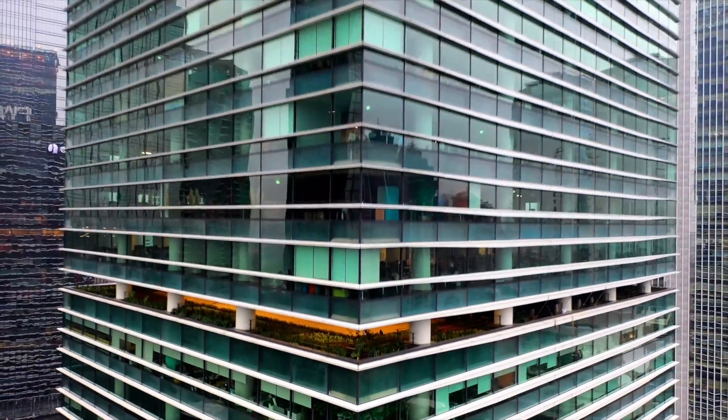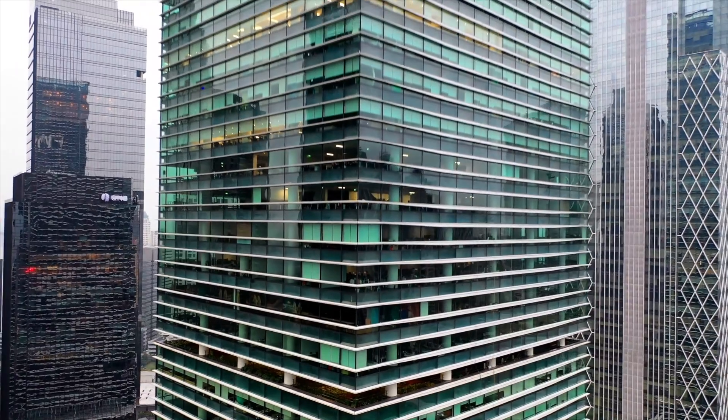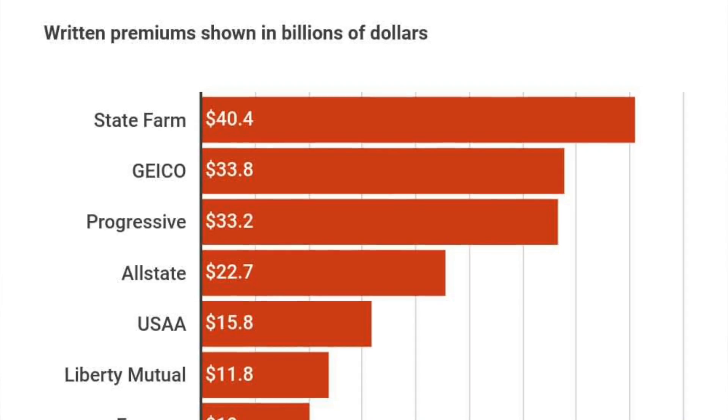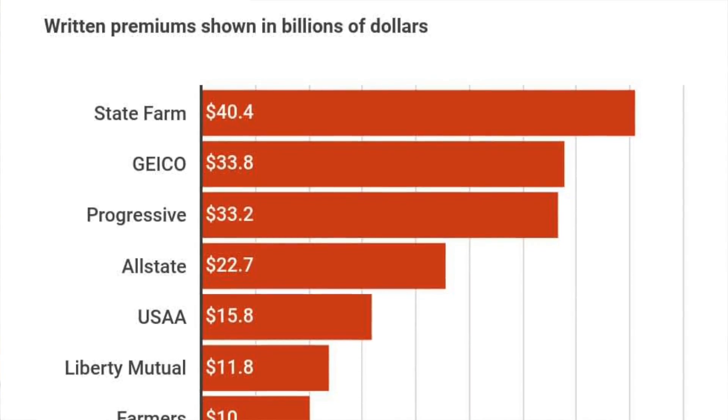The last topic I want to talk about is why do actuaries even need to know how to code? Can't they just write it with paper and pencil? Well, no. Actuaries work with a ton of data. Insurance companies are very large and have tons of policyholders, tons of claims, and a lot of math that goes into calculating premiums and reserves. Trying to do these calculations without coding programs would take a ton of time, so coding just speeds up the process.